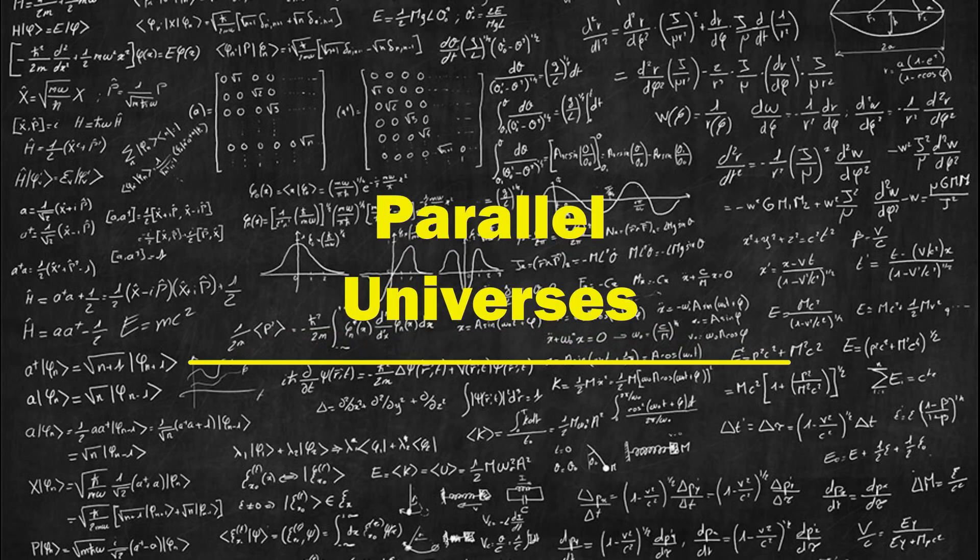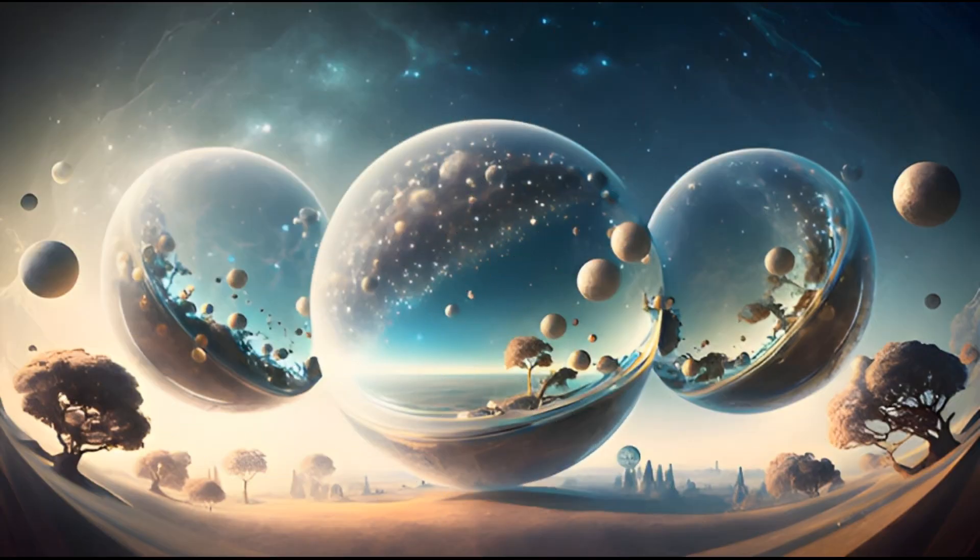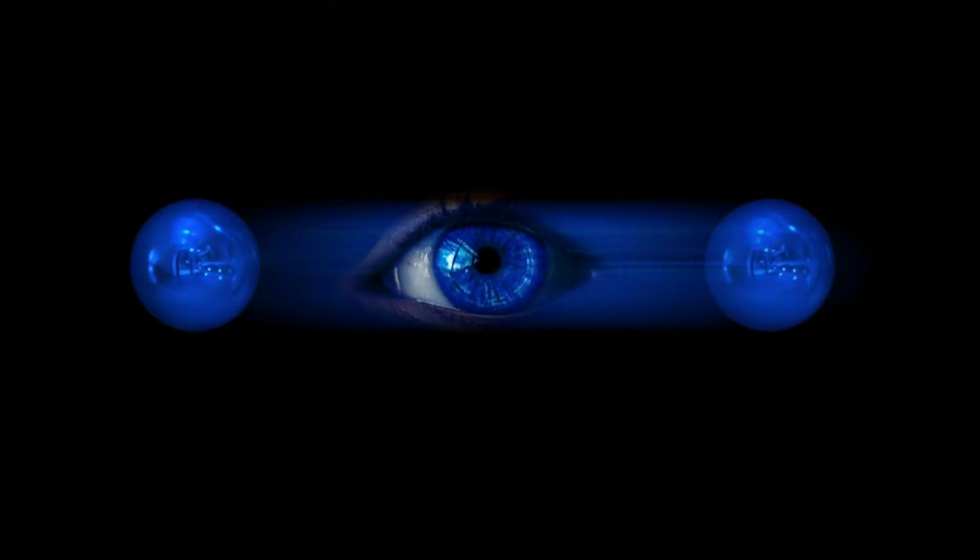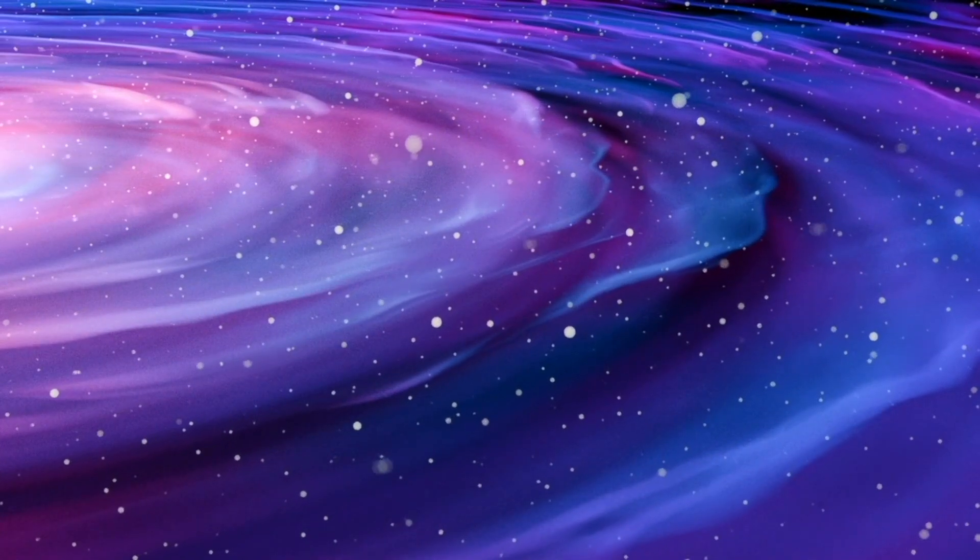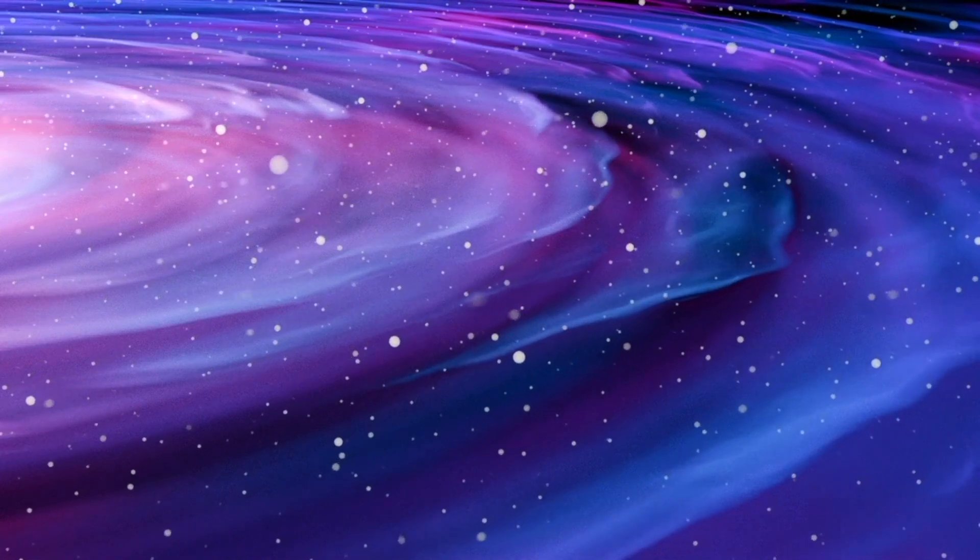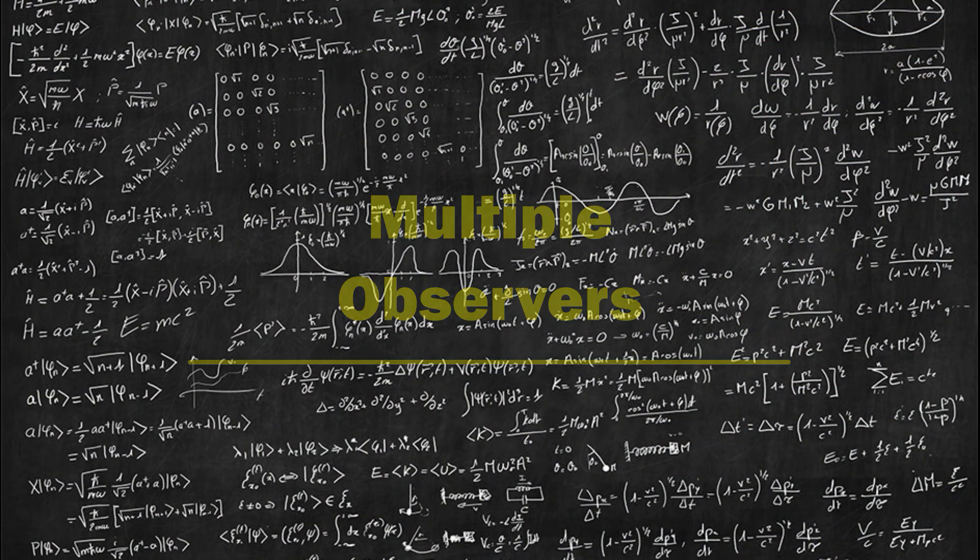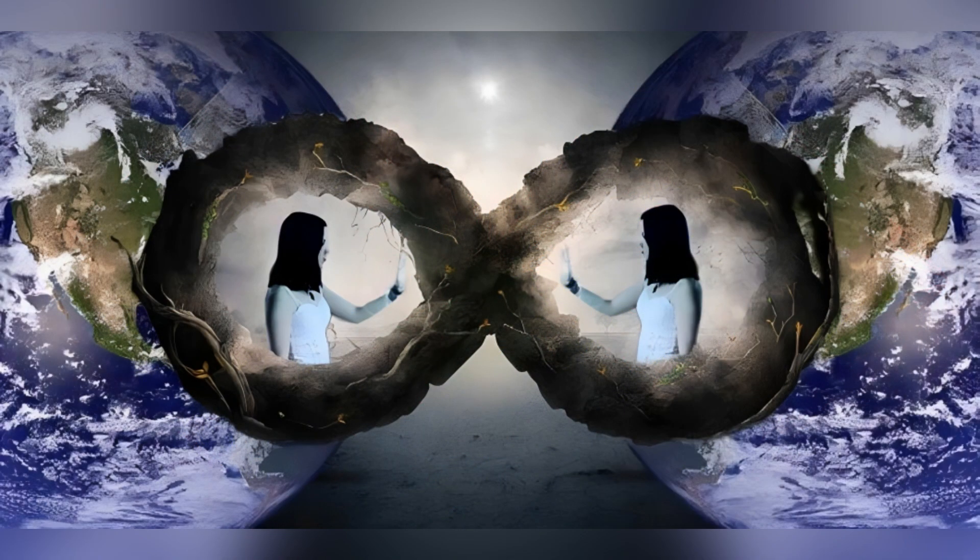Parallel universes: The fundamental implication of many-worlds theory is parallel universes. Each branching point represents a separate path for a universe. These universes encompass different outcomes of decisions, events, and measurements. Multiple observers: The theory proposes that not only one observer but every possible observer experiences states in their own parallel universe. Each observer lives and experiences in their distinct parallel universe.